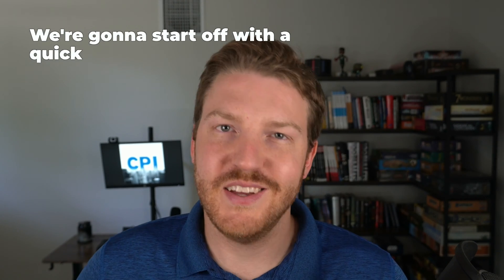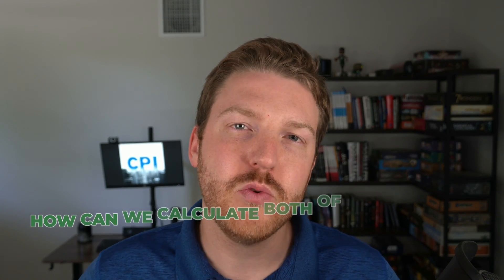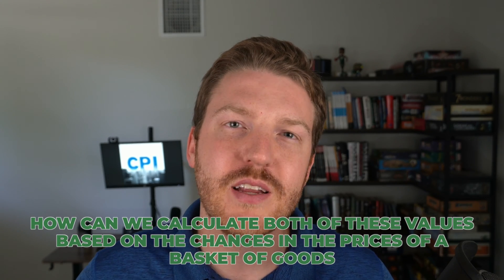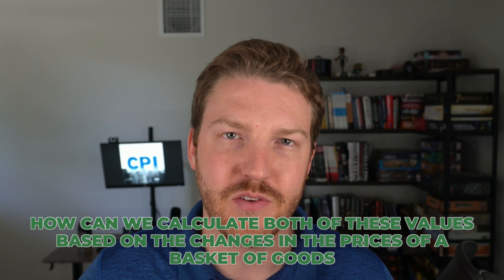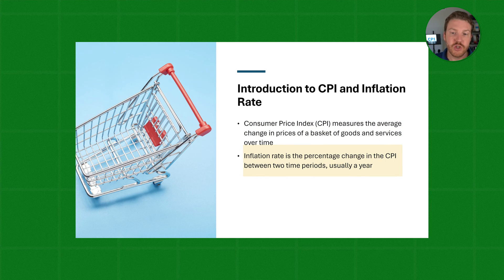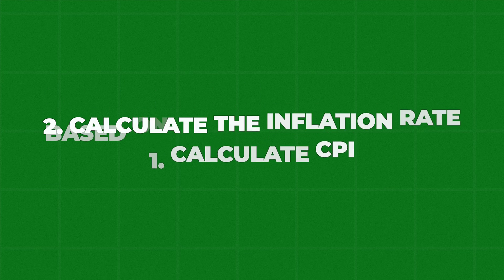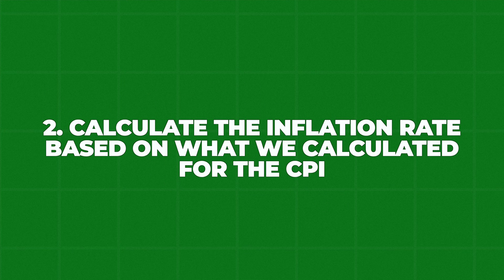Hey everybody, we're going to start off with a quick definition of the consumer price index and inflation rate, and then we'll talk about how we can calculate both of these values based on the changes in the prices of a basket of goods. The consumer price index, or CPI, measures the average change in prices of a basket of goods and services over time. Inflation rate is the percentage change in the CPI between two periods of time — usually people use a year, but you can use a month, etc. So step one is going to be to calculate the CPI, and then step two will be to calculate the inflation rate based on what we calculated for the CPI.